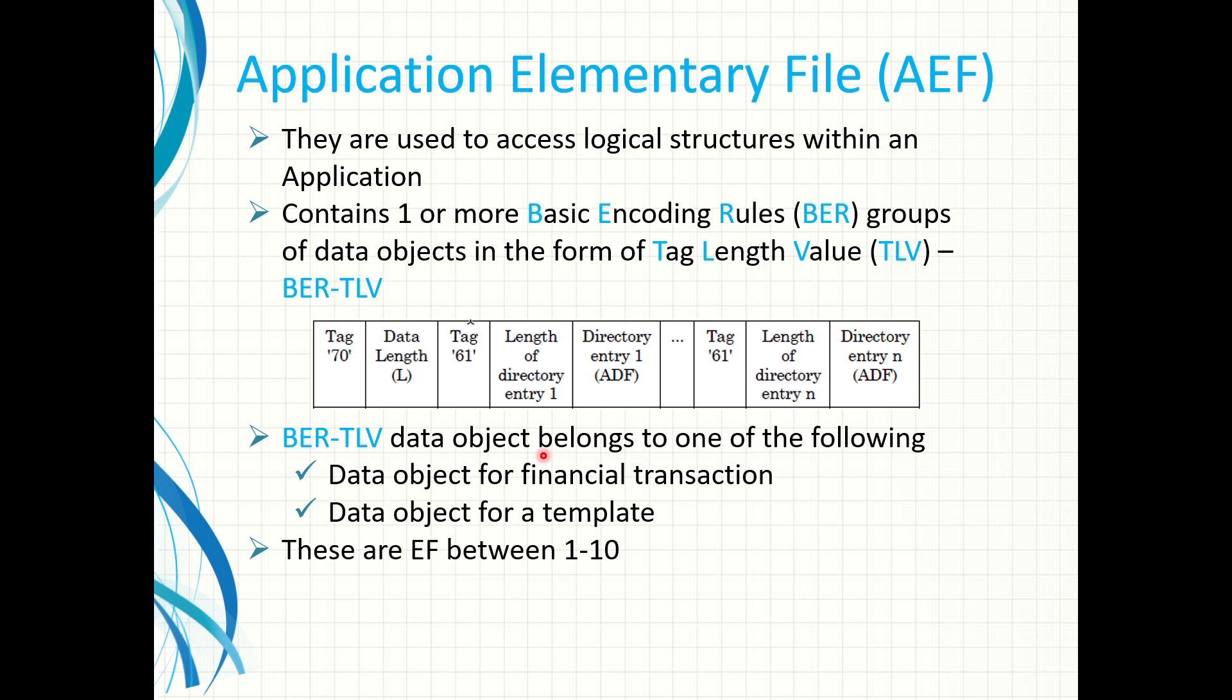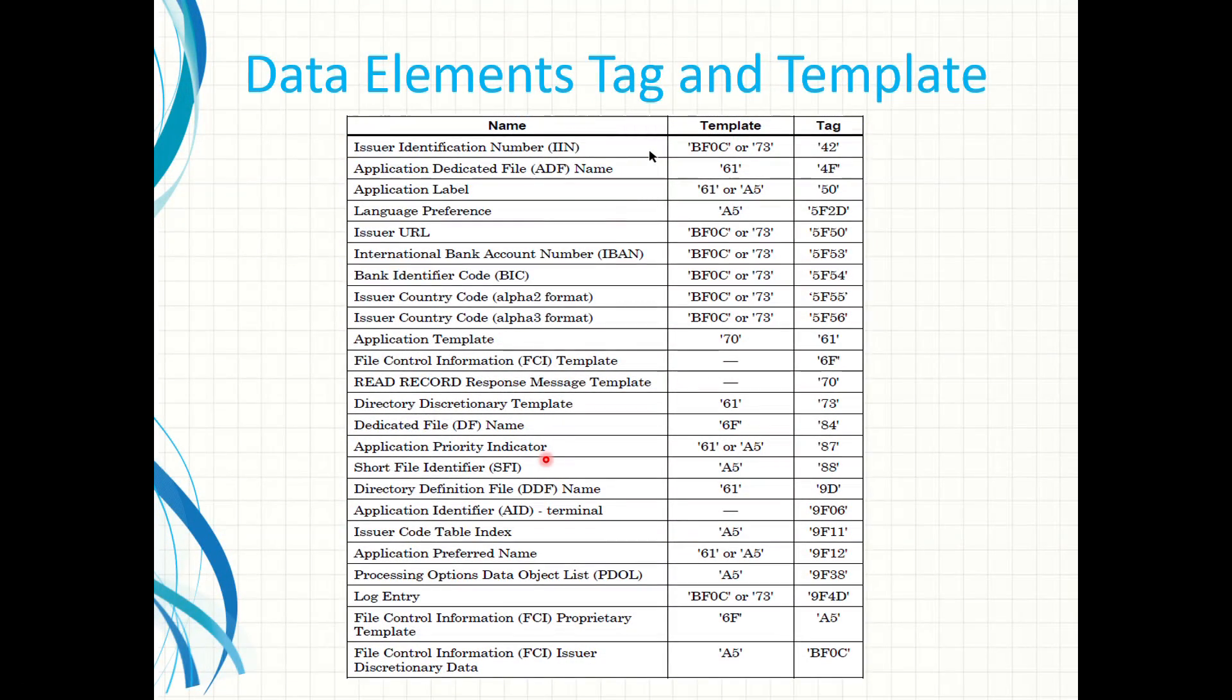They encode data objects for either financial transaction or a template. These are elementary files between 1 to 10. There is a table taken from the specification book 1 with the possible tags and templates they may occur in. I will make a video about the commands EMV cards understand and their possible responses with demos. This reference table will become clearer at that point. For now just keep it by your side, it is the key.